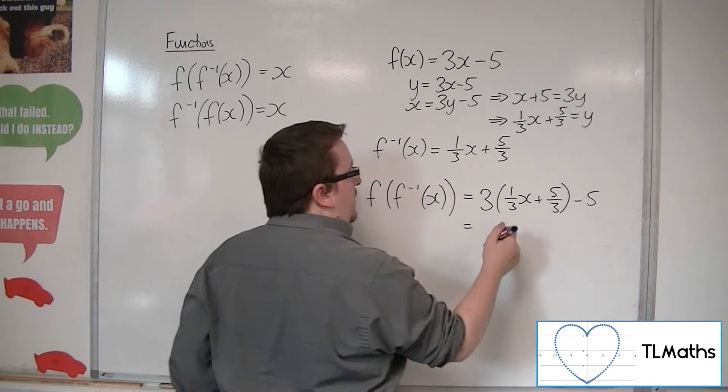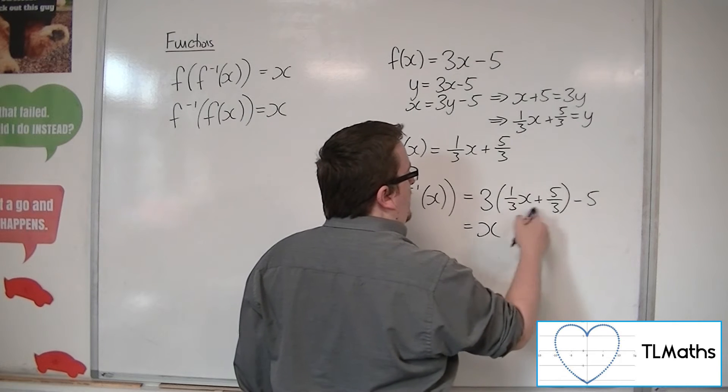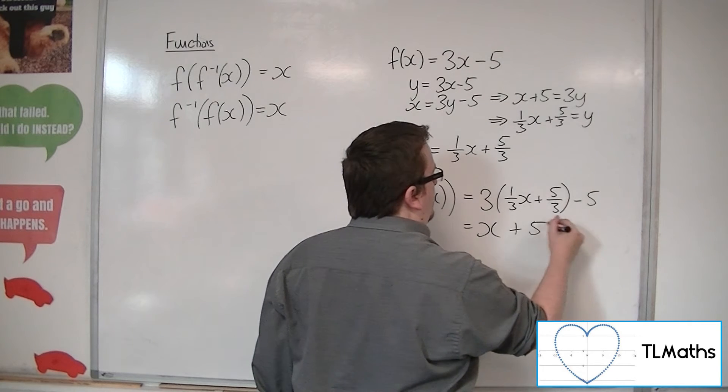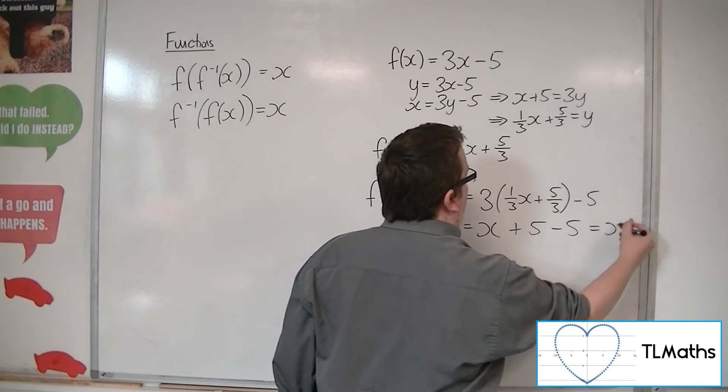We've got 3 lots of a third x is x. 3 lots of 5 thirds is 5. We've still got the minus 5, and so we just get x.